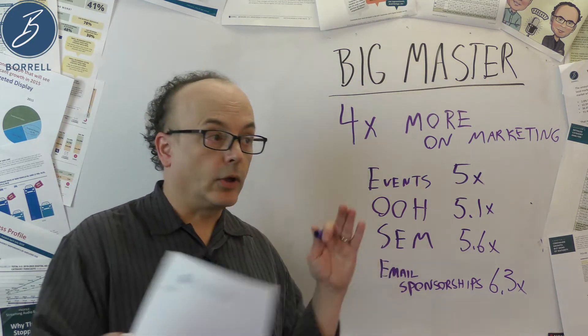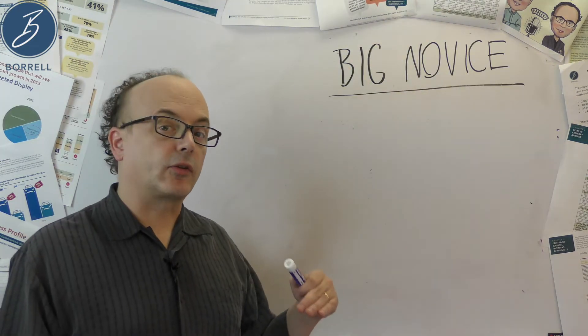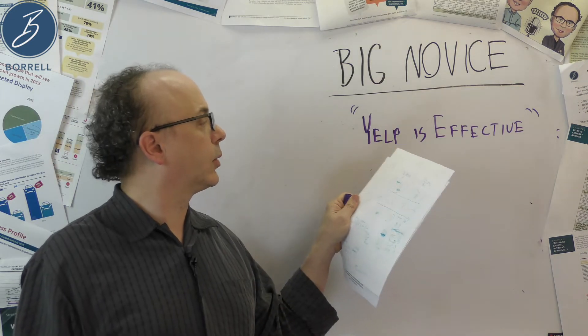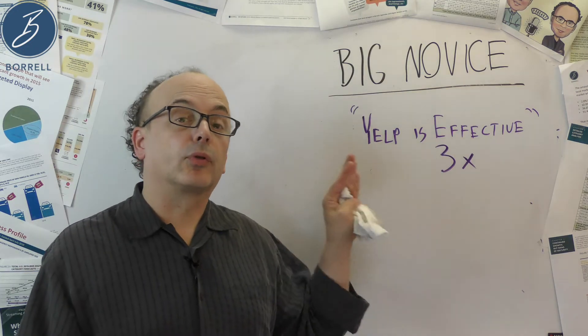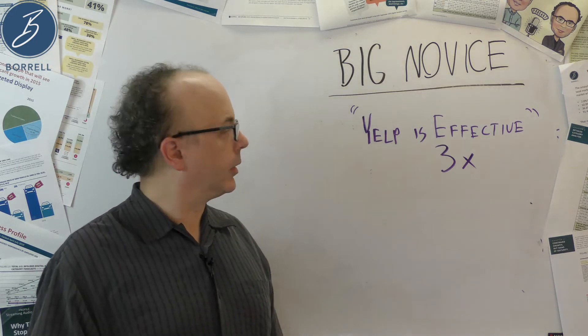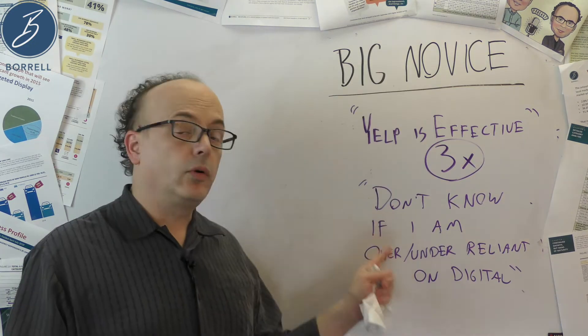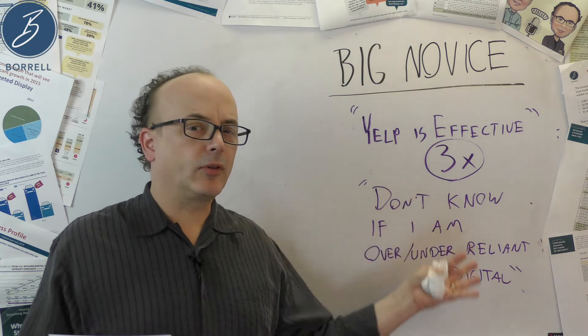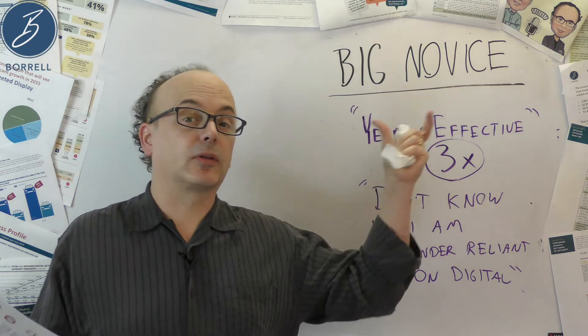But what about the big novices? Are they doing anything more than the big masters? Well, a little different. Nowhere does the big novice spend more than the big masters. They do outrank them in other places. At what rate do you think they rated Yelp as effective more than big masters? Novices were three times more likely to say Yelp is effective. They were also three times more likely to say, don't know if I'm over or under the line on digital. I don't know. So why? Why are we seeing these differences?